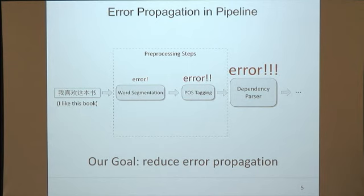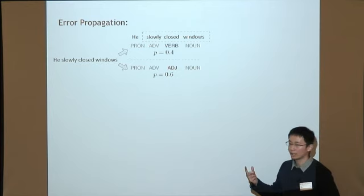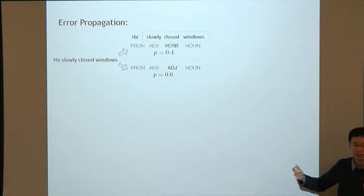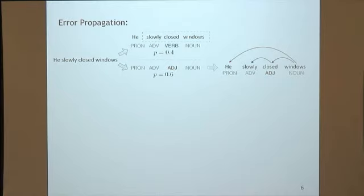The goal of our work is to use joint modeling to address this error propagation problem. For example, in the sentence 'he slowly closed the windows,' the word 'closed' should be a verb. However, it's very difficult for a window-based POS tagger to predict it correctly, because given the context 'slowly closed windows,' the word 'closed' can be either a verb or an adjective. If the tagger predicts it as an adjective, it's very likely that the parser will also make mistakes, because an adjective is usually the modifier of a noun rather than the root of the sentence.